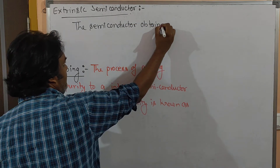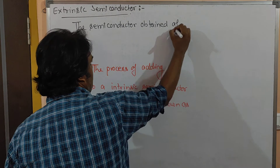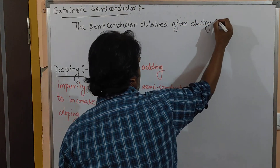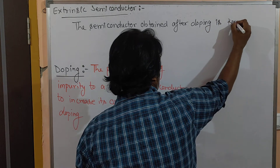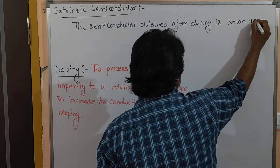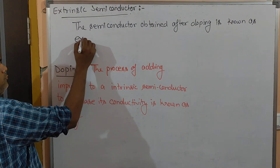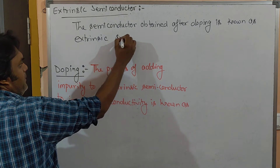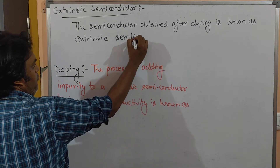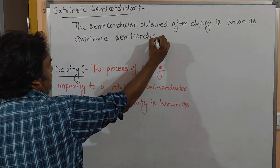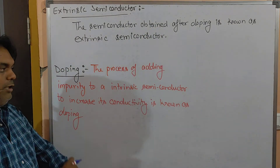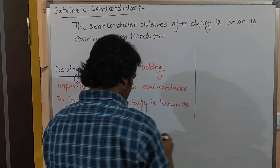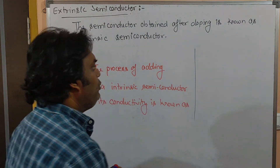The semiconductor obtained after doping is known as an extrinsic semiconductor. Now, these impurities are of two types.